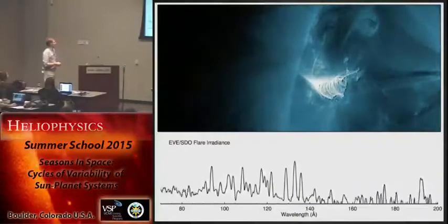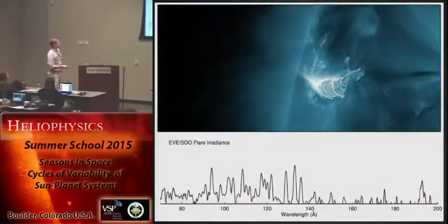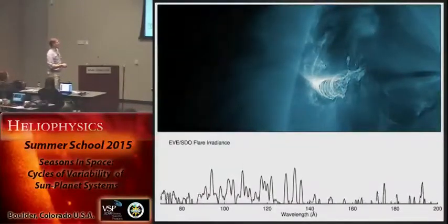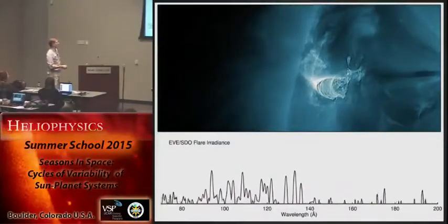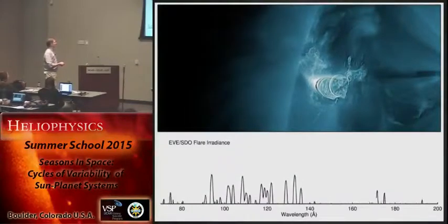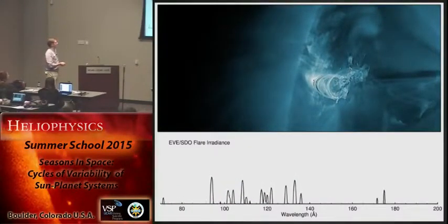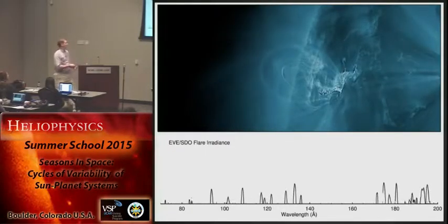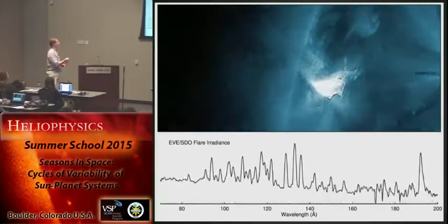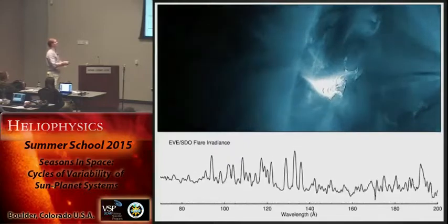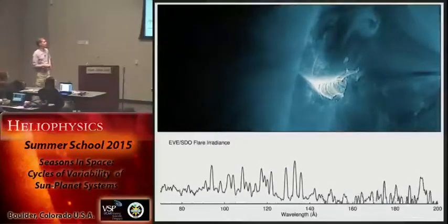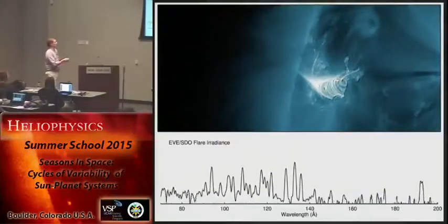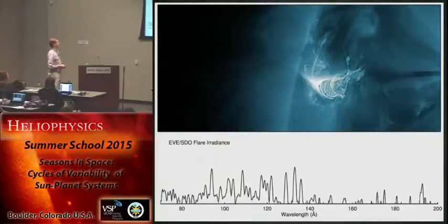This slide illustrates the irradiance variability during a flare. These are all high-temperature emission lines — iron 18, 19, all the way up to iron 24 — and in a flare you get an enormous increase in the emission from this small region on the sun.